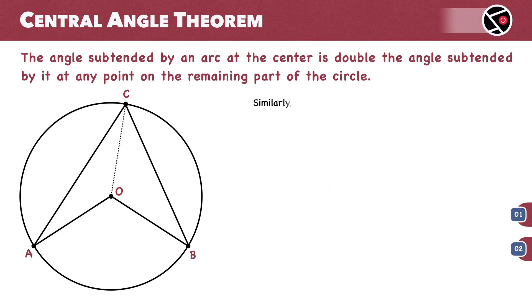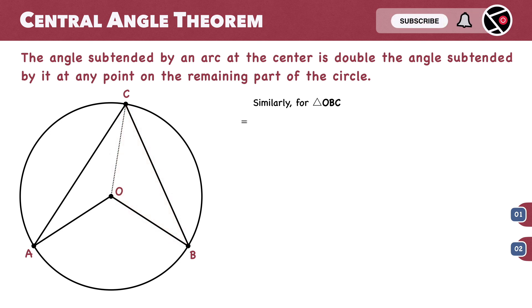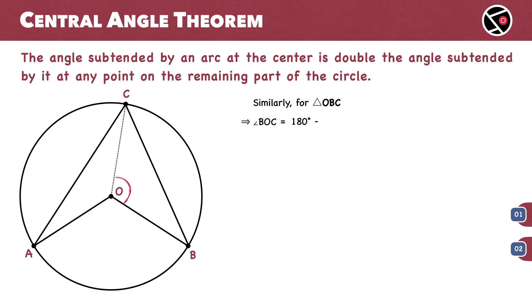Similarly, for triangle OBC, we can prove that angle BOC equals 180 degrees minus 2 times angle OCB. This is equation number 3.